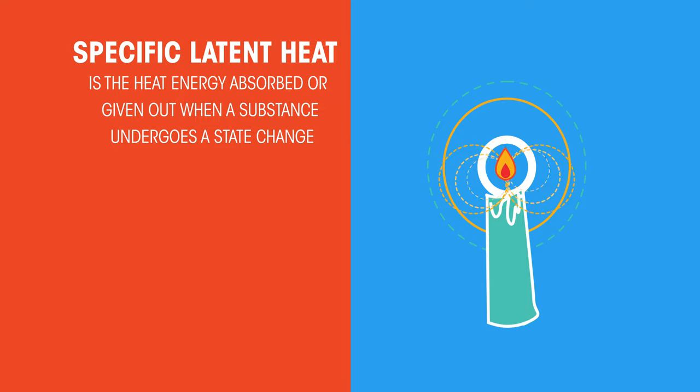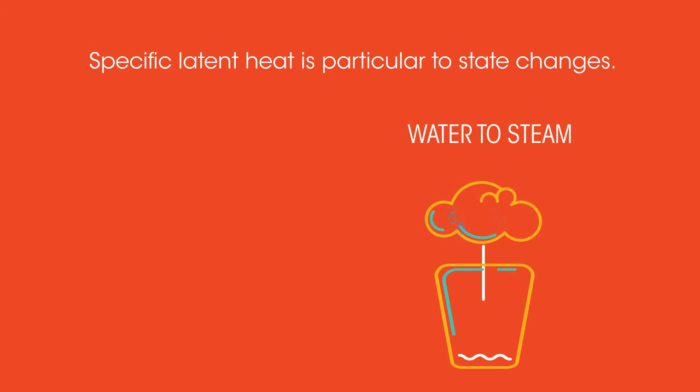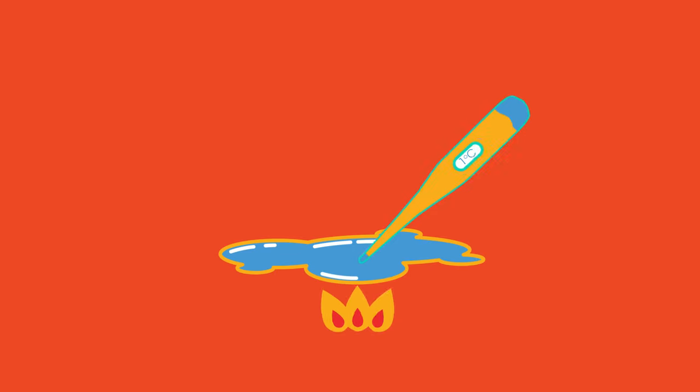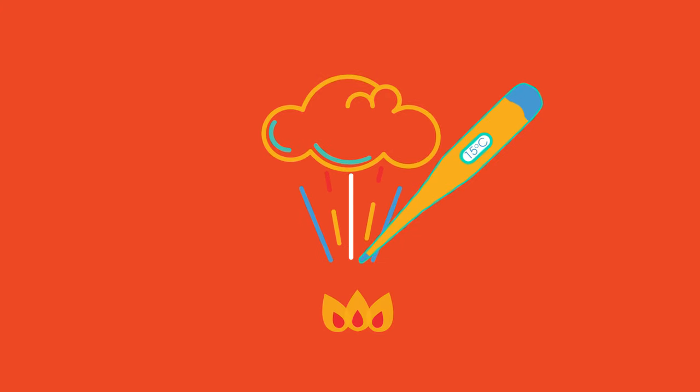Two key things to note. Firstly, that specific latent heat is particular to state changes, so the specific latent heat to change ice to water is different to the specific latent heat to change water to water vapor. And secondly, that there is no change in temperature during the change of state. It remains constant. The temperature will only change once the state change has completed.